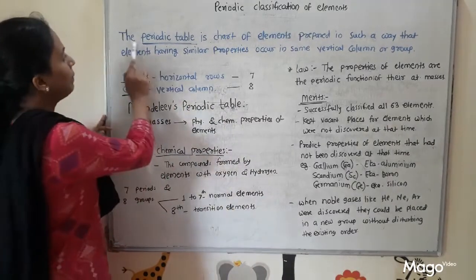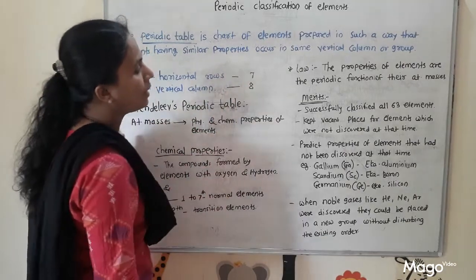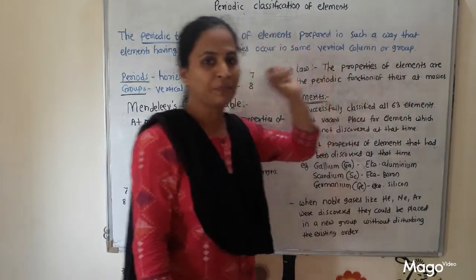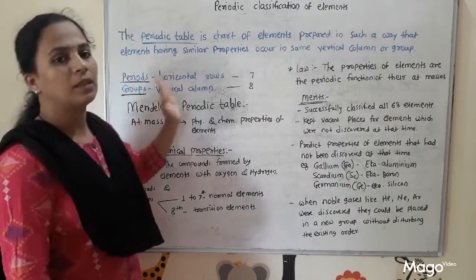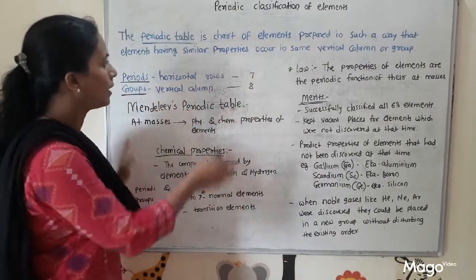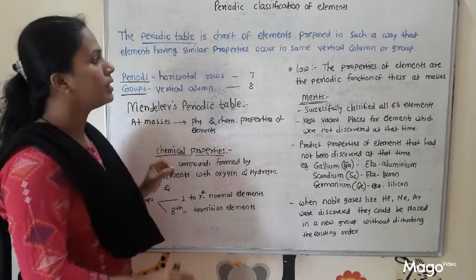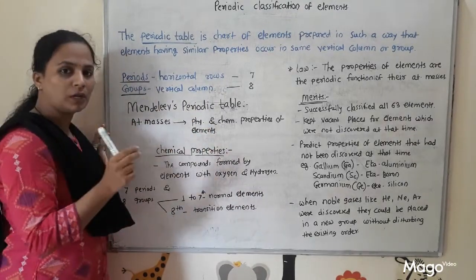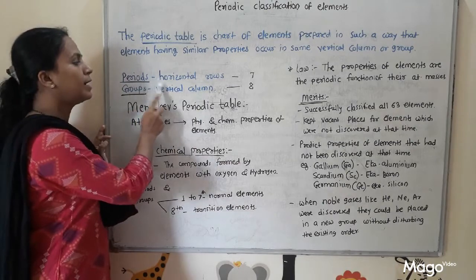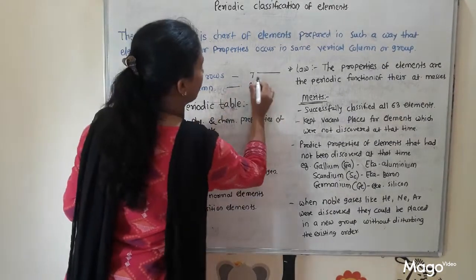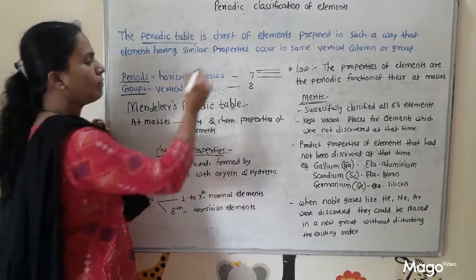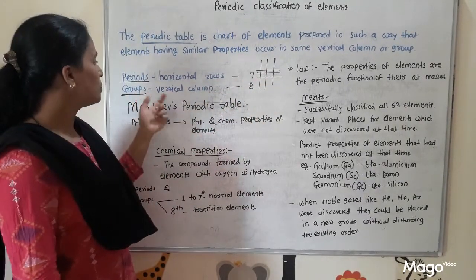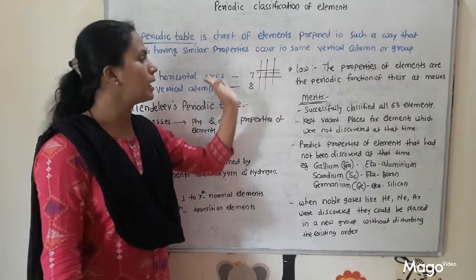What does the periodic table mean? It is a chart of elements in which elements are arranged according to similar properties so that they come in the same column, the same group. In Mendeleev's periodic table, two more terms are important: periods and groups. Periods are horizontal rows, and groups are vertical columns.